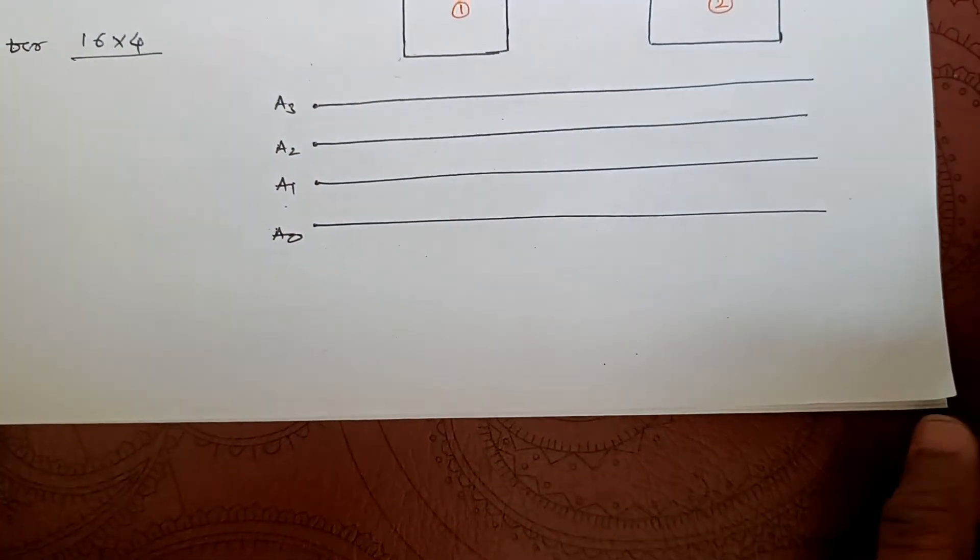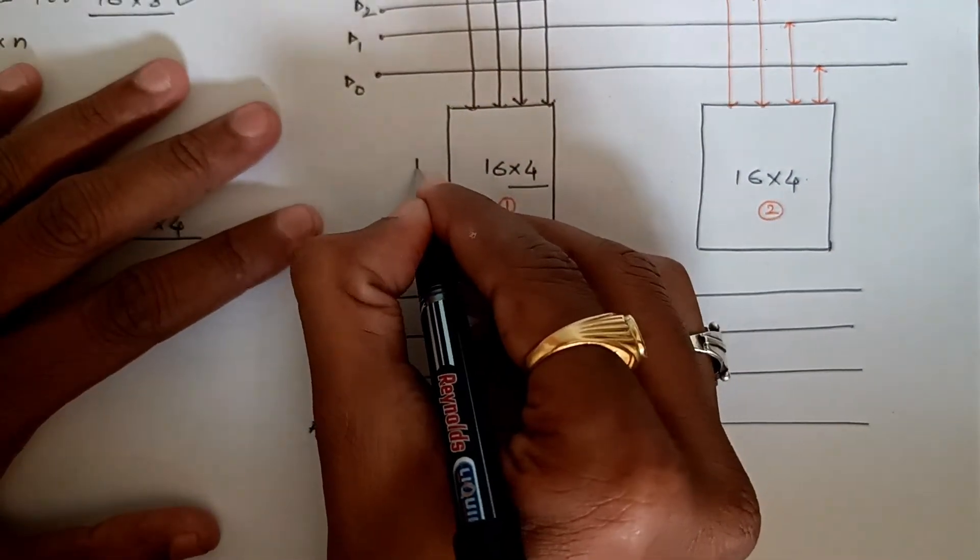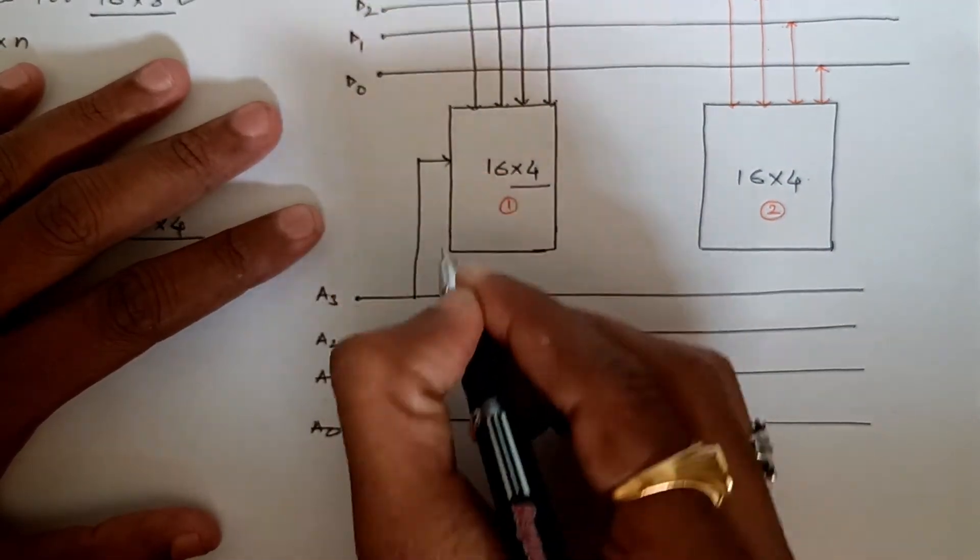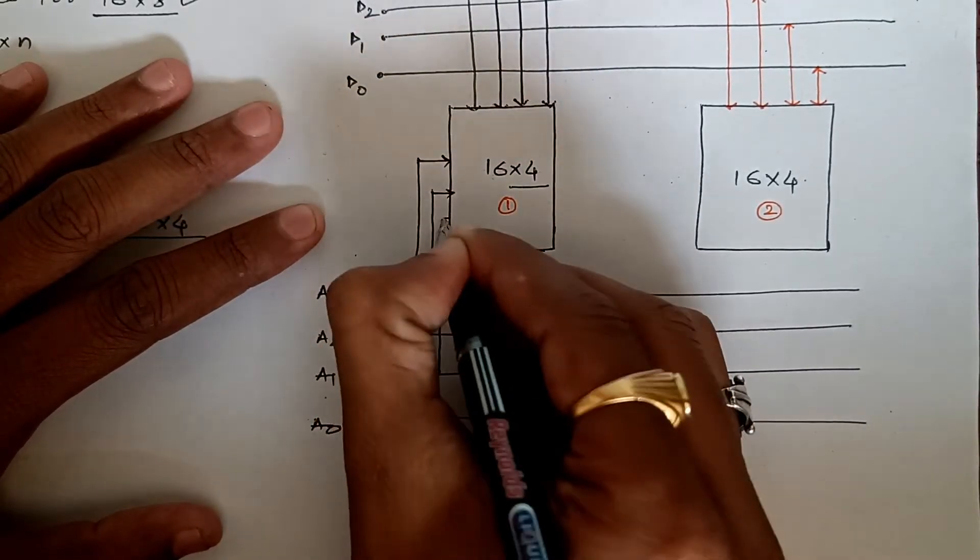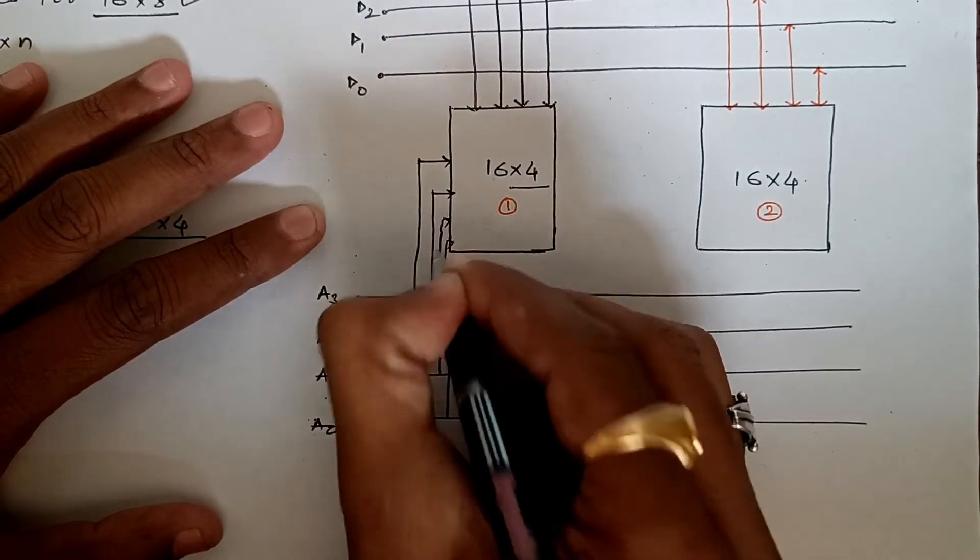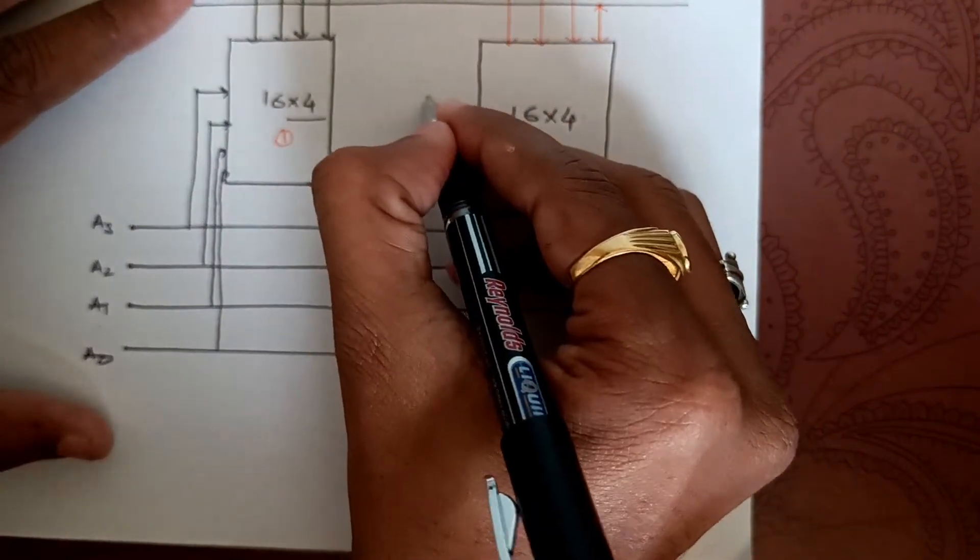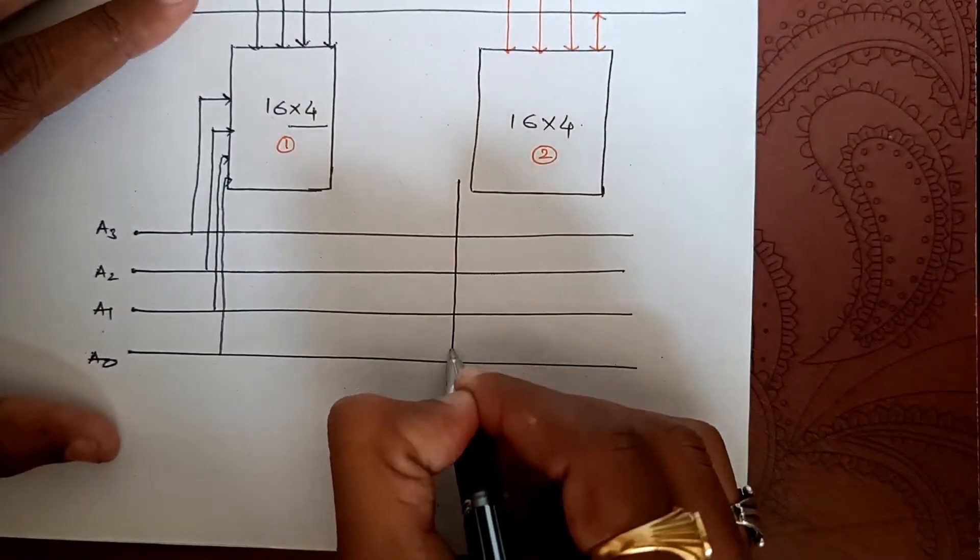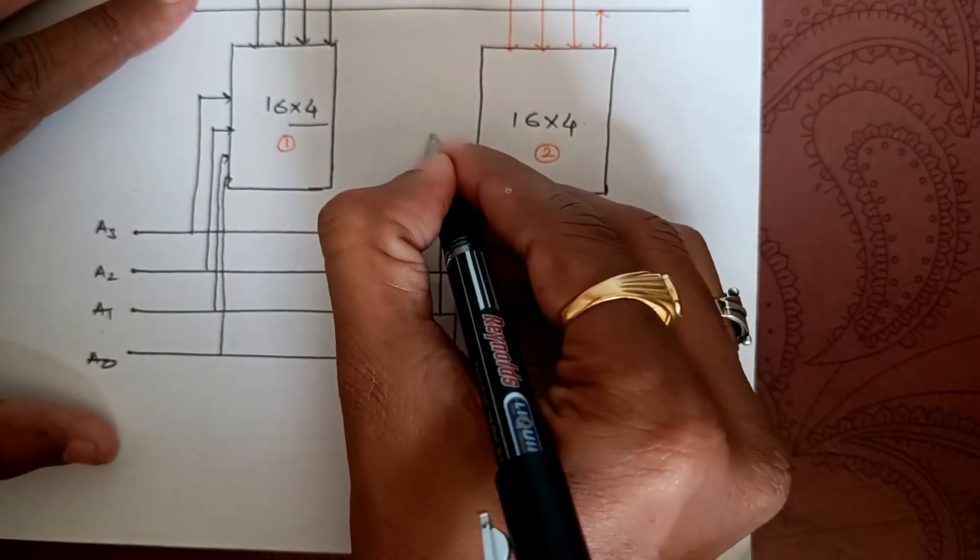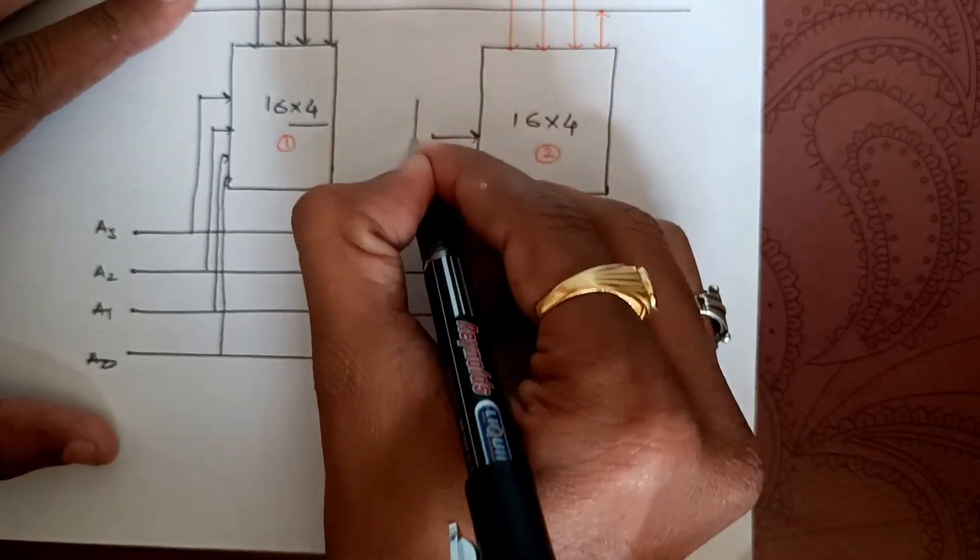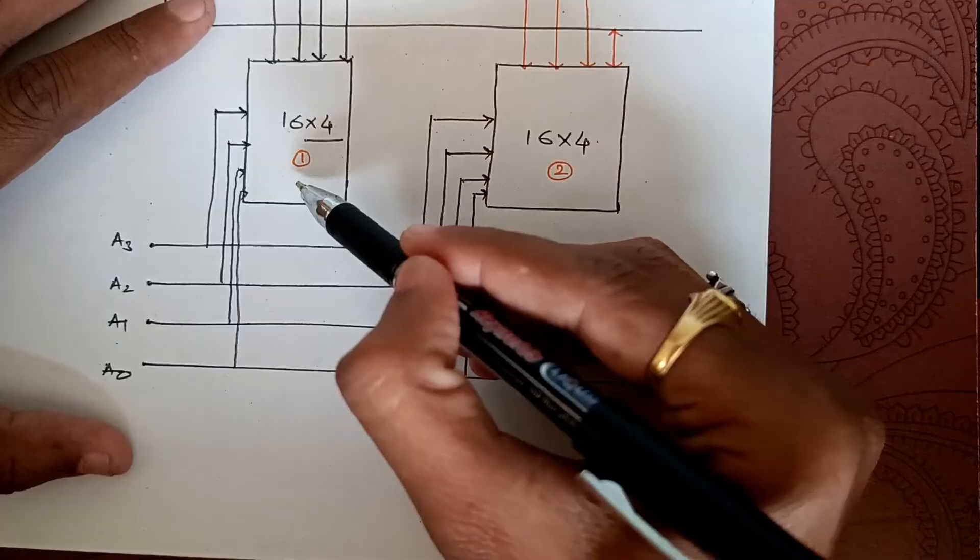Now let's connect this also: a3, this is a2, this one is a1, and we'll connect a0. In the same manner, this one we'll connect starting with a0, a1, a2, and we'll connect a3. So we have connected address lines to this IC as well as this one.